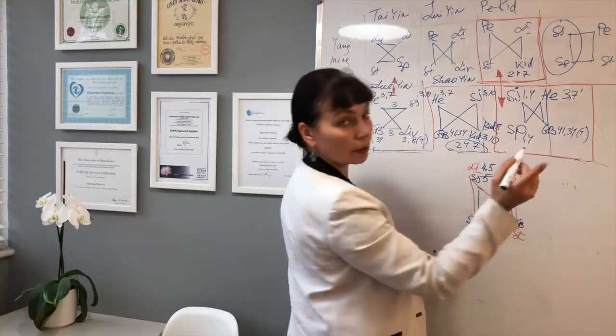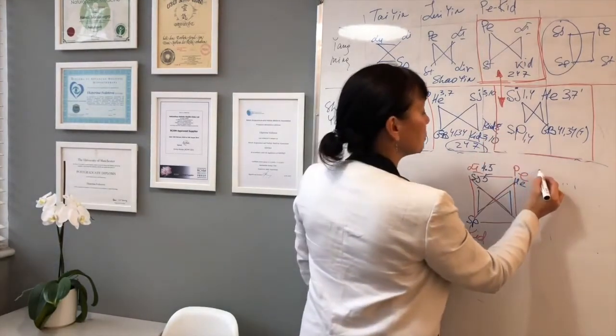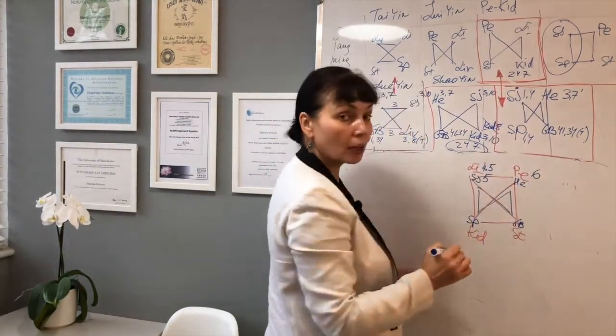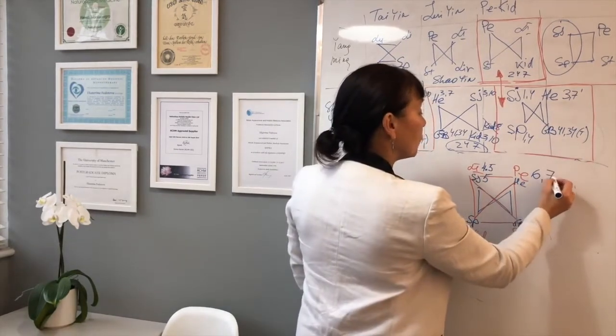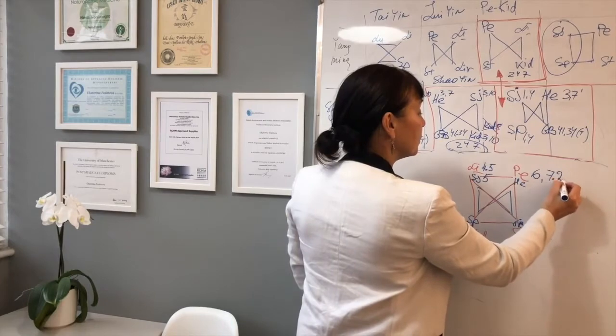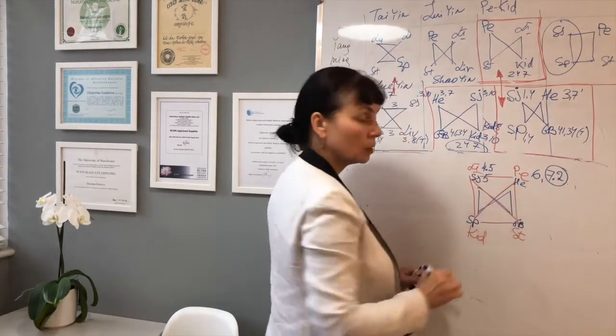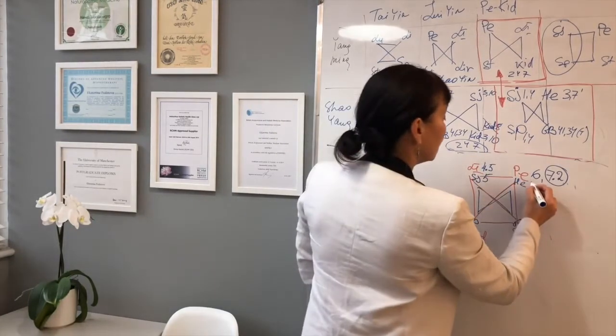Pericardium, one of the best points is pericardium 6. And also, from balance method, we know that this is pericardium 7.2. Heart 5.